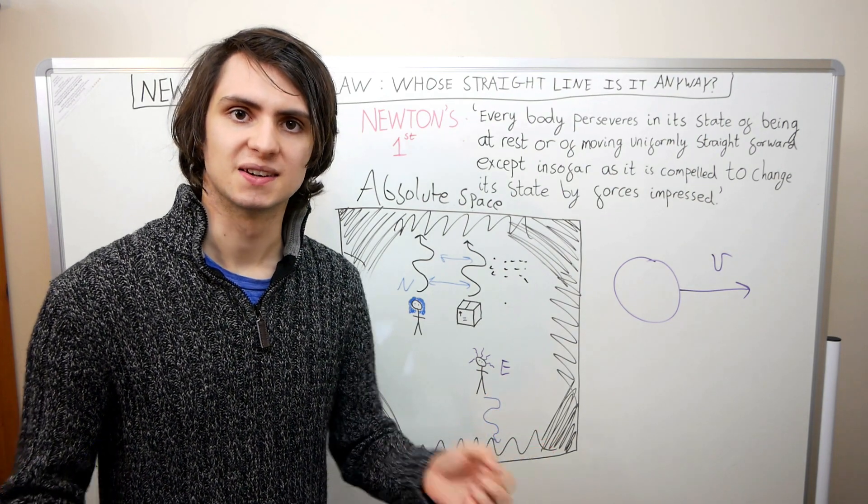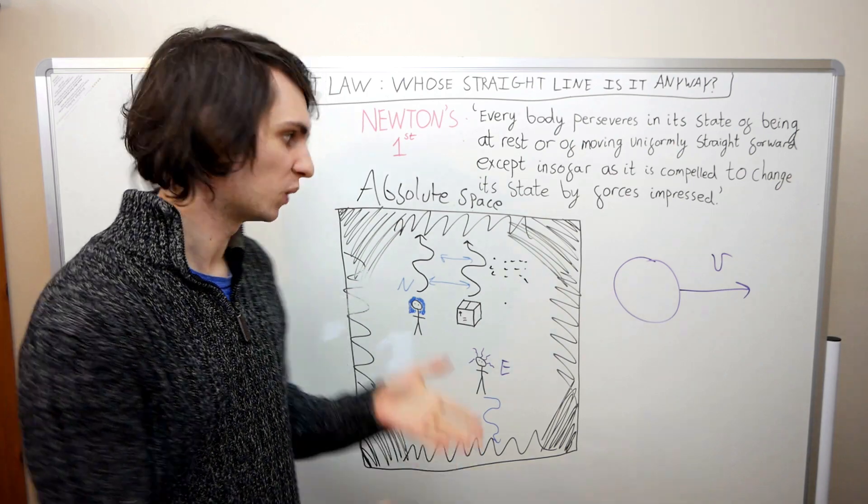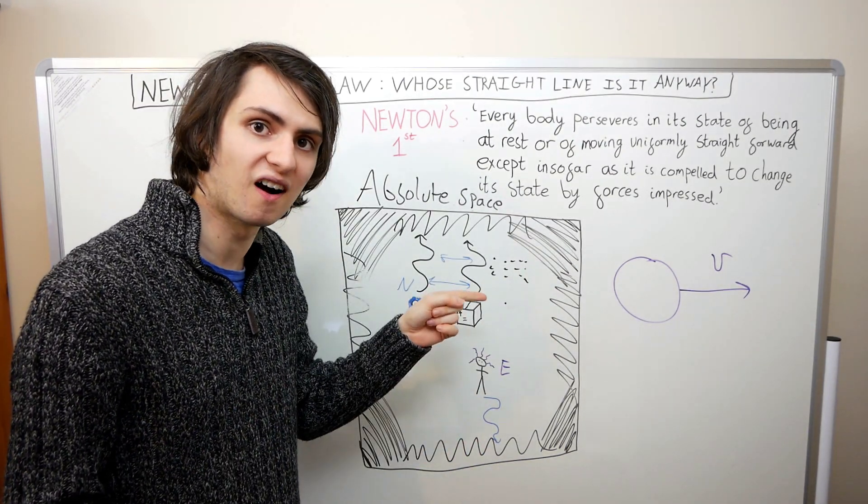But how can we do this? Newton said that these points were undetectable and unobservable. We can't see them. And worse, no experiment can ever tell us where these points are.